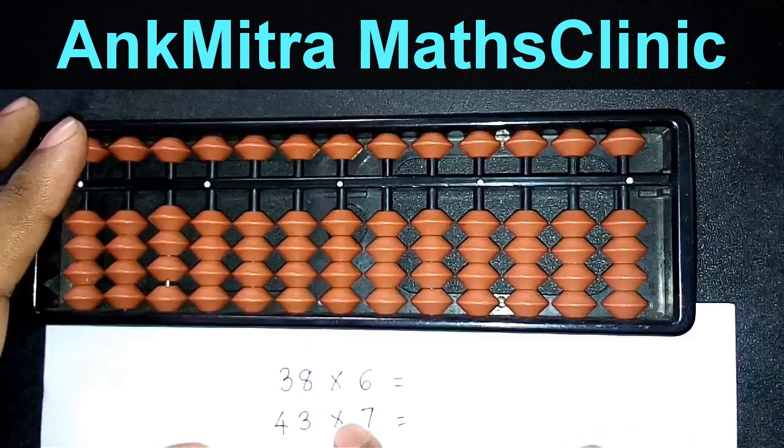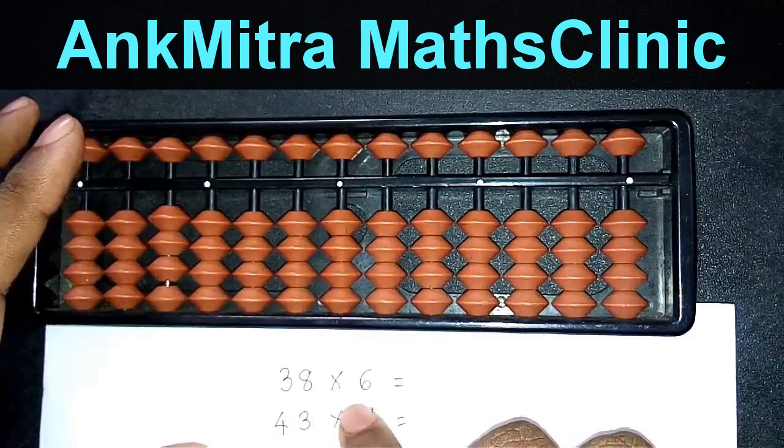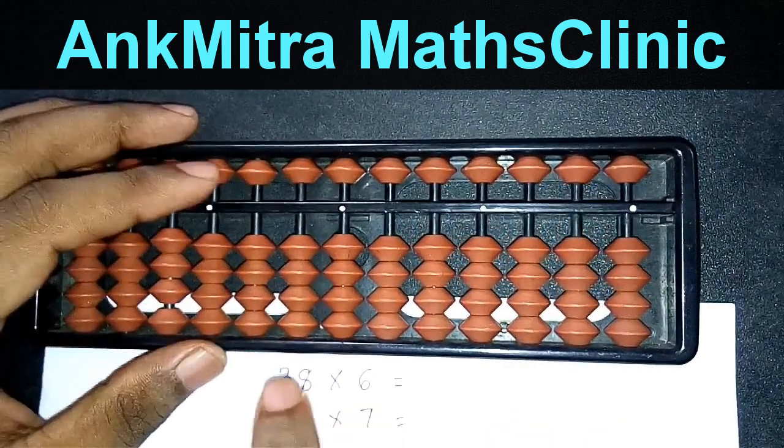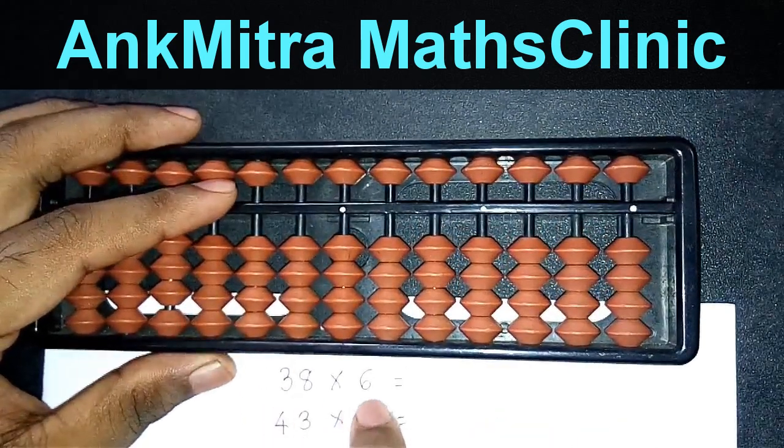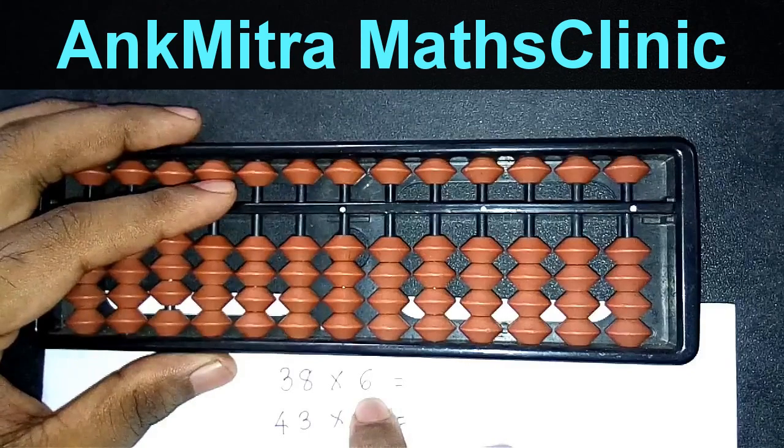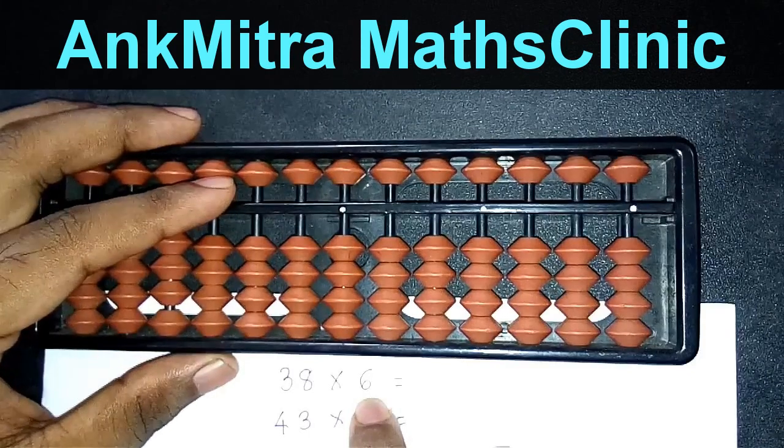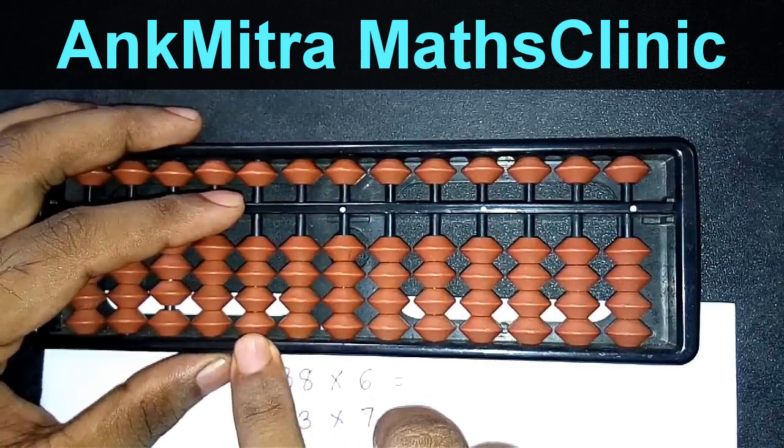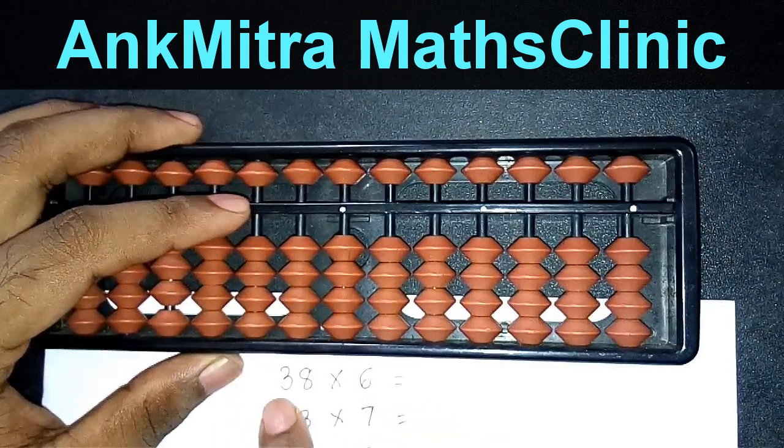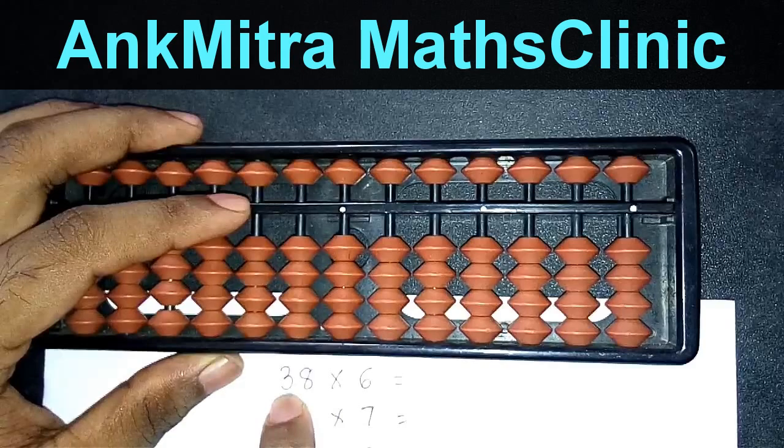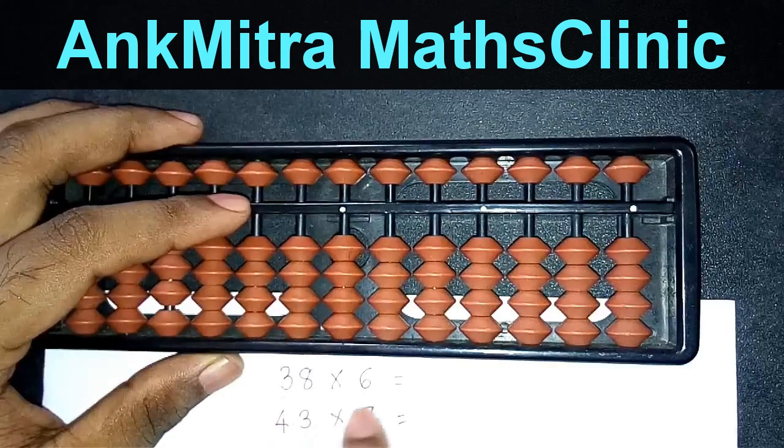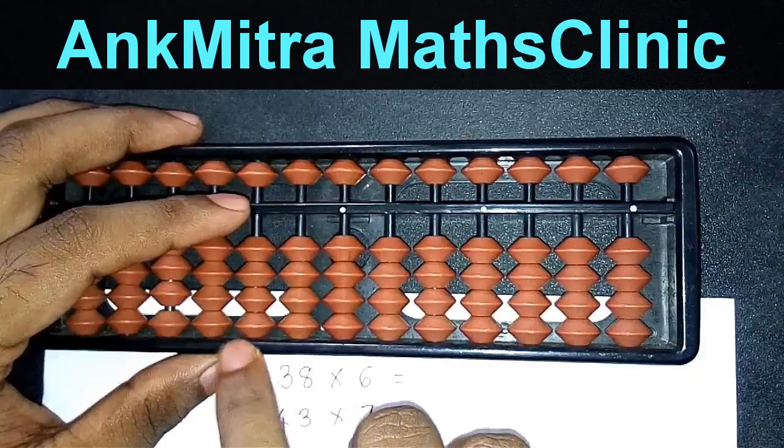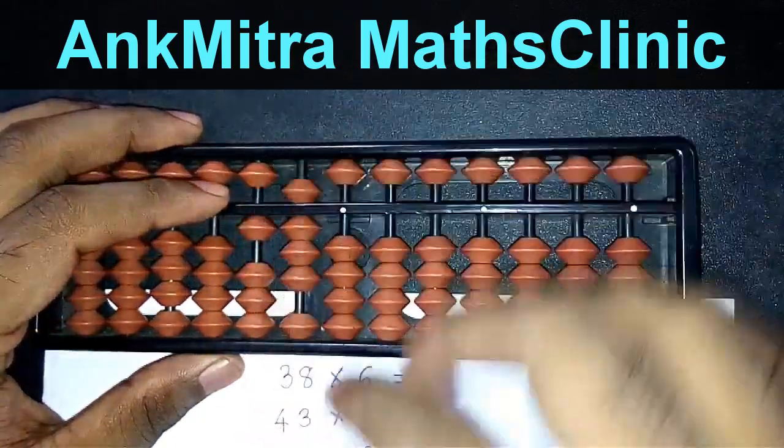So let's start with the first example here: 38 multiplied by 6. So it's a two-digit number multiplied by one-digit number. The entire answer will need three rods, that is, it will be a three-digit number. So we'll start with the third rod here. From the third rod, we'll use the tens place digit 3, multiply it with 6. So 3 sixes are 18. So this 18 I'll take from the third rod. So it will be 1 and 8.